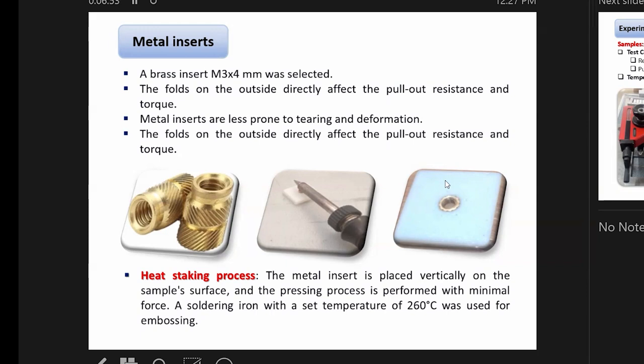As you see in the picture, we used brass metal inserts with special technology called heat staking process. This means the insert is placed vertically on the sample. We used a soldering iron set at temperature of 260 degrees and started to heat metal inserts. The inner diameter of the hole started to melt and push the metal insert into the hole.